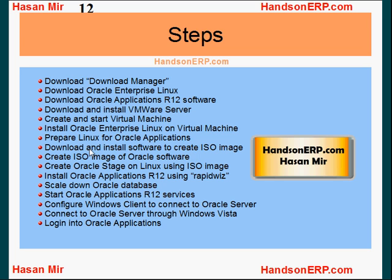Once that is done, we're going to install Oracle Enterprise Linux on the virtual machine. Then we're going to do lots of things on Linux to prepare it for Oracle application installation. The trick is the Oracle application has been downloaded on the main operating system, but we need that download on the inside operating system. The best way to transfer such a big and heavy file is through an ISO image, so we're going to create an ISO image from the external operating system. I'll download and install software to create the ISO image.